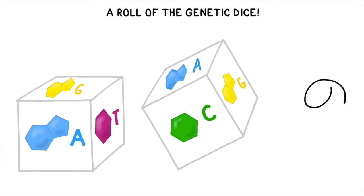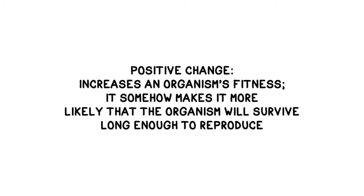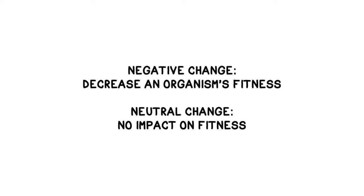On the whole, random mutation is responsible for the largest share of genetic variability. There are three categories of mutation: positive, neutral, and negative. Positive mutations increase an organism's fitness — in some way, shape, or form, they make it more likely that the creature will survive long enough to reproduce. Negative mutations decrease an organism's fitness. Neutral mutations have no effect on fitness, positive or negative.